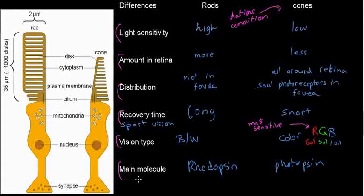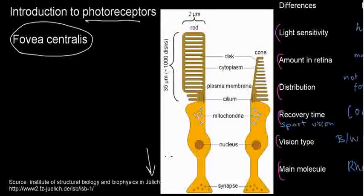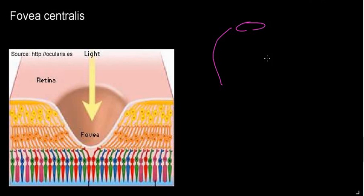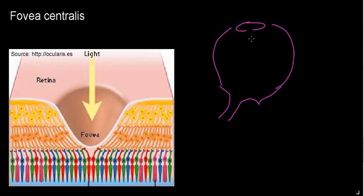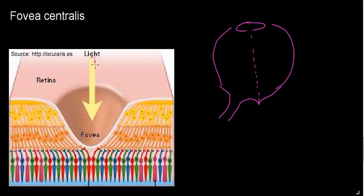Before we do, I want to discuss the fovea centralis. If this is my eye, I have the optic nerve coming in, and the fovea centralis is right here — it's a kink right on the optical axis.